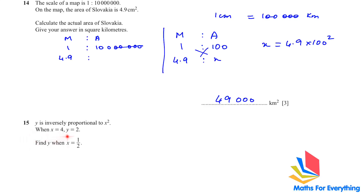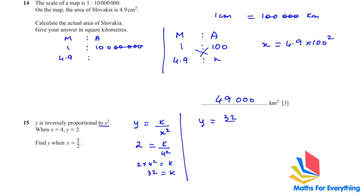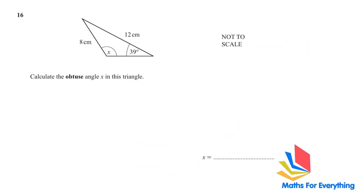Question 15: y is inversely proportional to x². When x = 4, y = 2. Find y when x = ½. Write y = k/x². Substituting x = 4 and y = 2: k = 2 × 4² = 32. So y = 32/x². Substituting x = ½ gives y = 128.